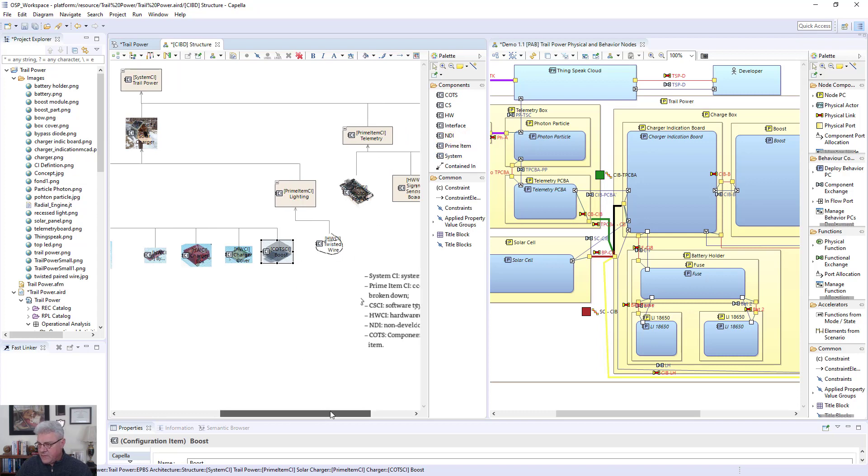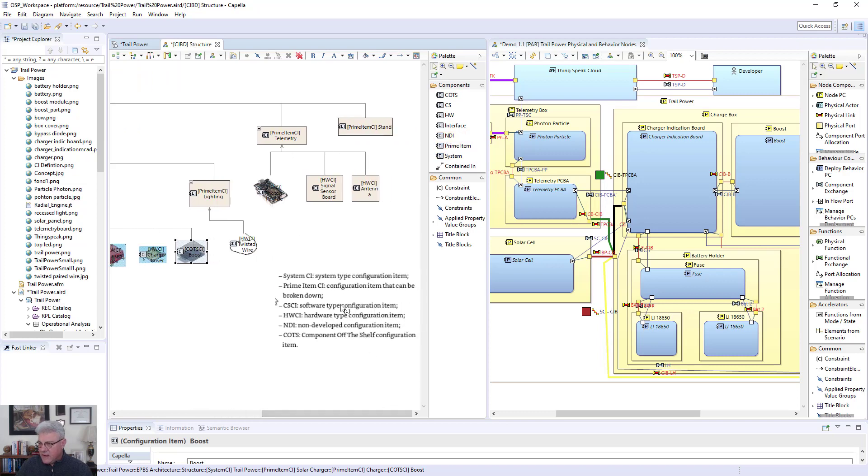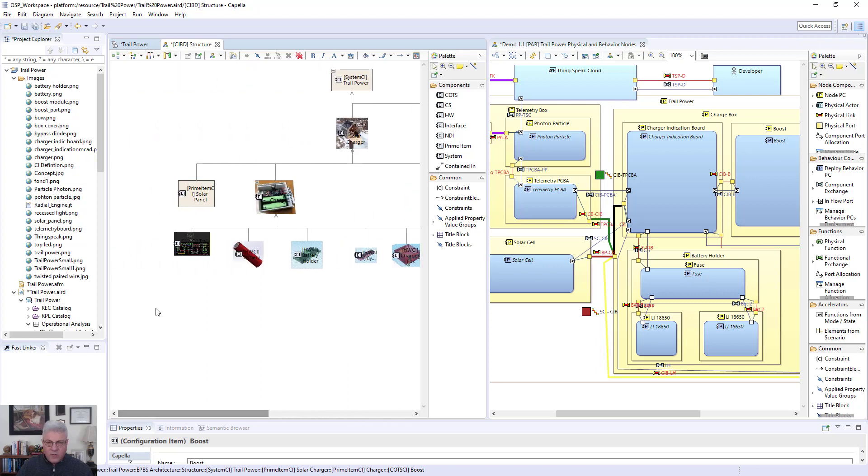It's a very useful diagram. Here's the definitions of what things are—I brought this up and captured it as a screenshot. You have systems, you have prime, you have computer software hardware configuration items, non-developed configuration items, and COTS commercial off-the-shelf items. This helps you start planning out where you're going to get the products, who you're going to source them from, and then how you're going to assemble them and even bring them together to build the unit.